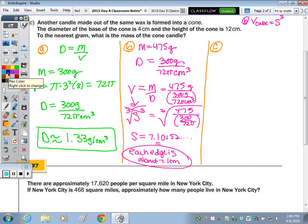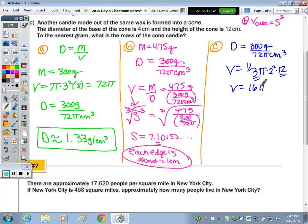Last part, part C, another candle is made out of the same wax. So we're going to use the same density. The diameter of the base of the cone is going to be 4 centimeters, and the height is going to be 12 centimeters. To the nearest gram, what is the mass? So density is 300 grams over 72 pi cubic centimeters. We need to find the volume. Volume for a cone is 1 third pi r squared times the h. Our radius is 2. So times 2 squared times the height of 12. So let's take a third of 12. 4. 4 times the 4. Volume is 16 pi cubic centimeters.